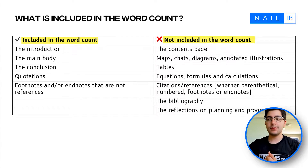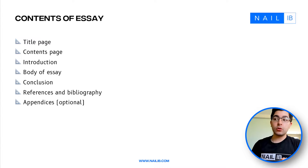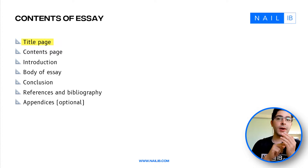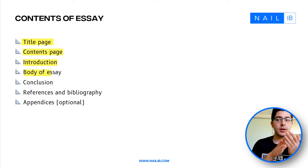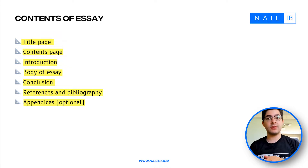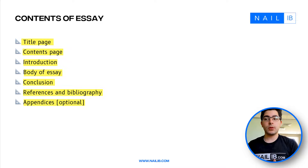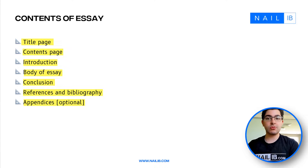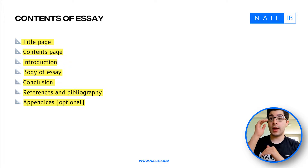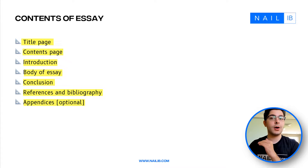What should you include in your essay? You should include a title page, a contents page, an introduction, a body, a conclusion, references, and potentially appendices if needed. This is a sparse skeleton structure, but you must have all these main sections — if you don't, you will be marked down.